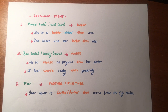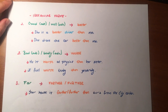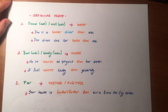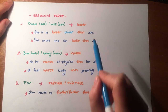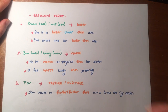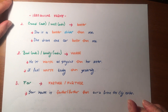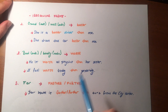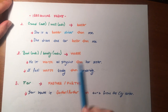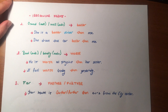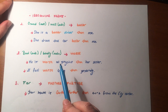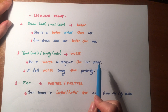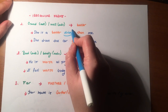Yes, let's talk about irregular forms. We have irregular forms in this subject again. Good is the adjective form, well is the adverb form, and you can use 'better' in the comparative form. For example: she is a better driver than me — benden daha iyi sürücü dedik.